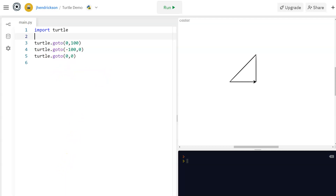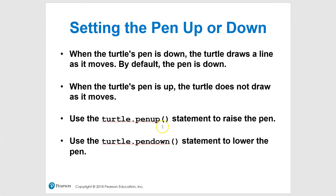Some other useful commands: penup and pendown. Sometimes when you're drawing something you want a gap — not everything will be connected. So you use turtle.penup(), move using goto or forward to the next place, put the pen back down with turtle.pendown(), and continue drawing. These are very useful. Refer back to this PowerPoint as a reference since you won't use them all the time.